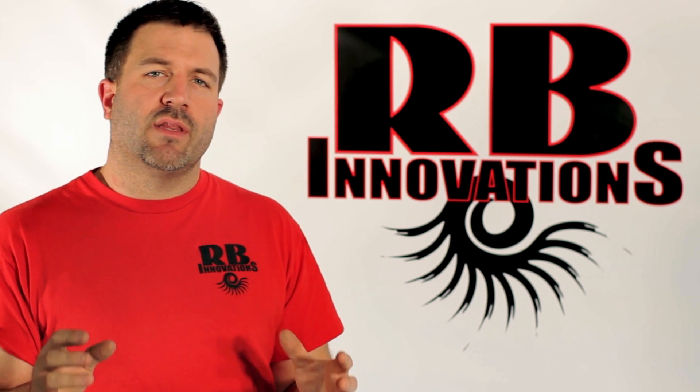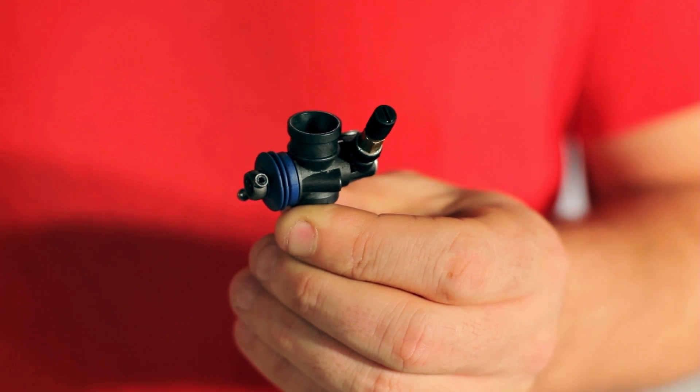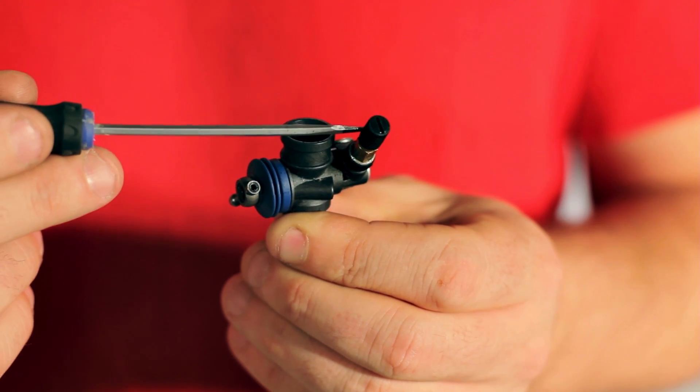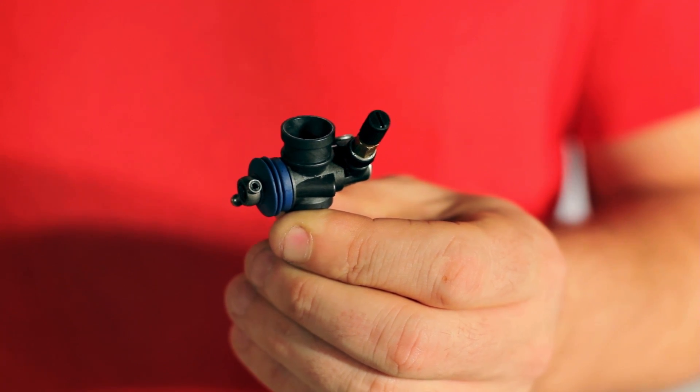Before we get started, I want to show you some of the basic adjustments on a standard carburetor. First thing I want to point out is the high-speed needle jet. This is located right here. This is going to meter the amount of fuel going to the engine at top RPM.